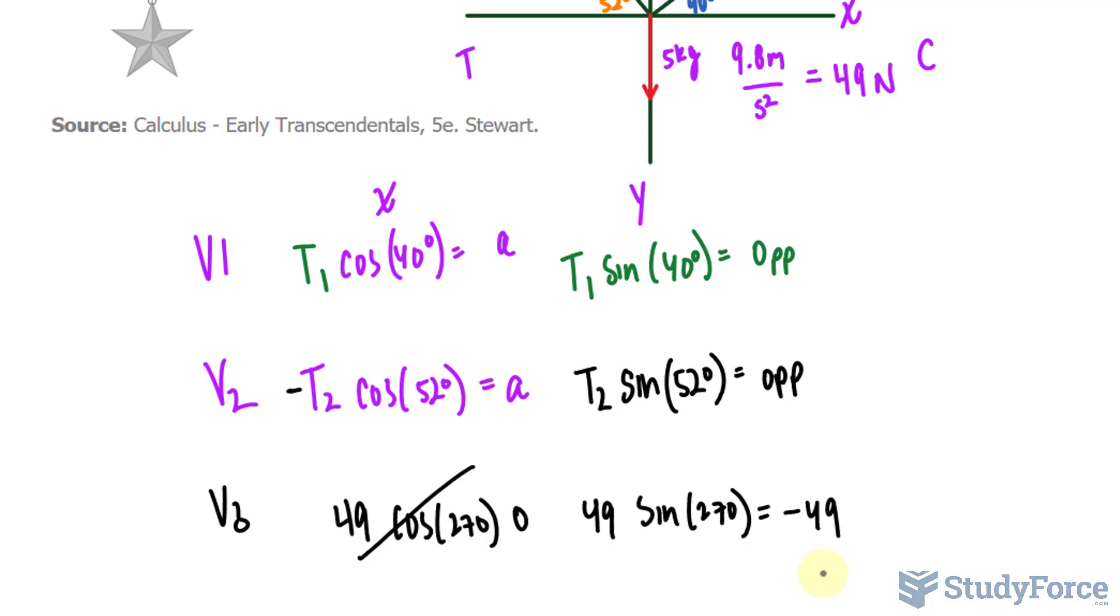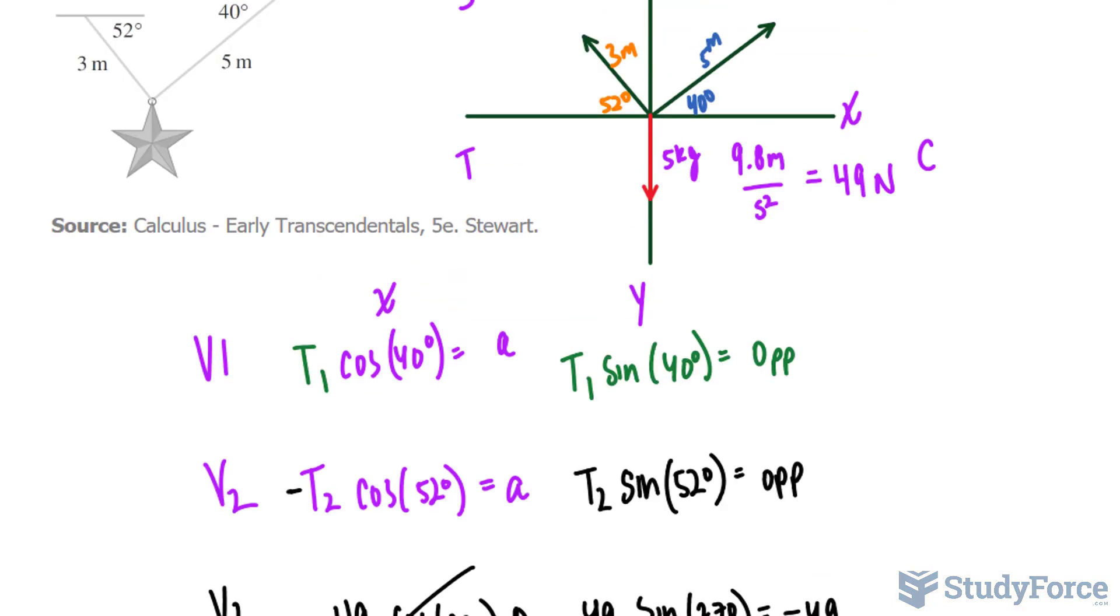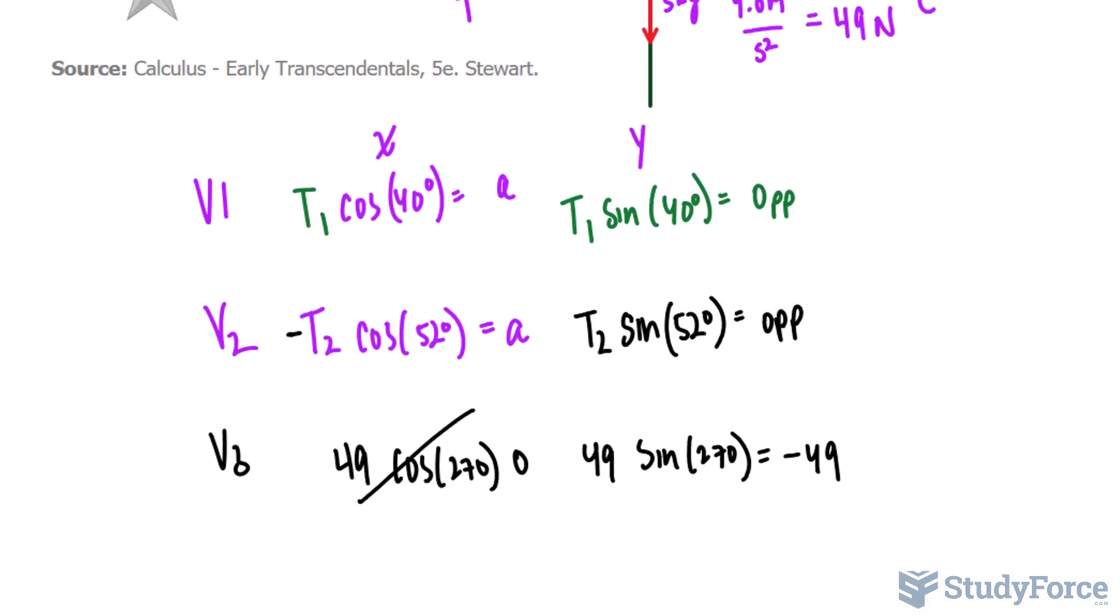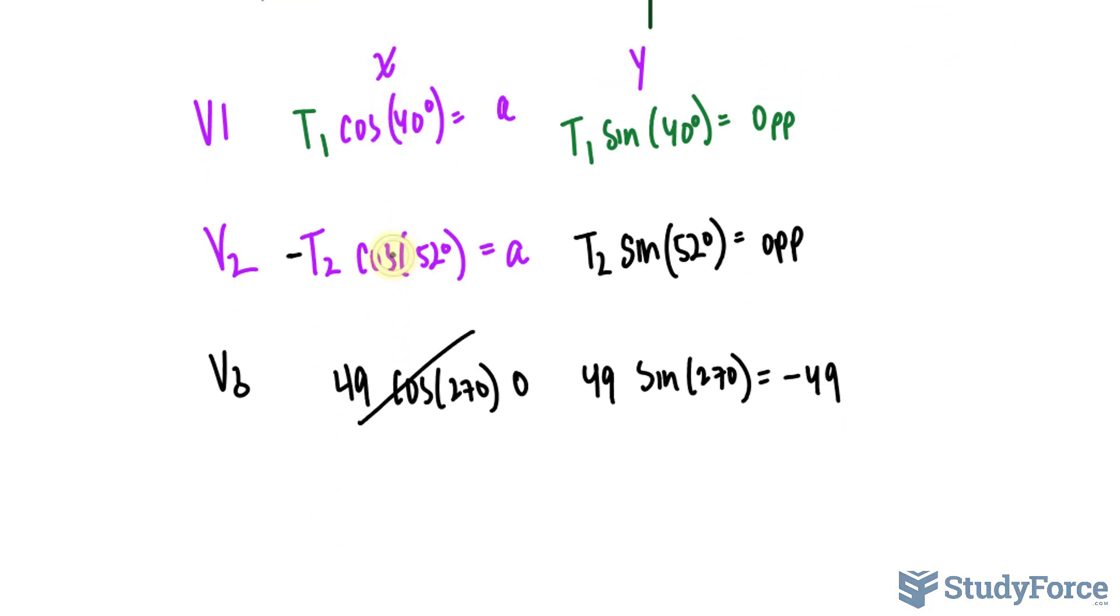Once you find all your x and your y components, you want to add them up. And one thing that I didn't mention is that this object that's hanging from these two wires is at equilibrium. It's not moving in any particular direction. It's staying still. And because of that, the sum of all the forces acting on it should equal to 0. So with that said, adding this component, this component, and that component should equal to 0. Adding all three of these should also equal to 0.